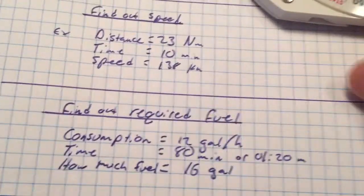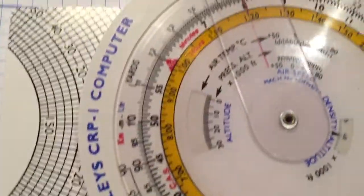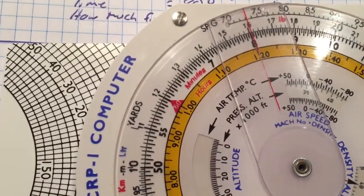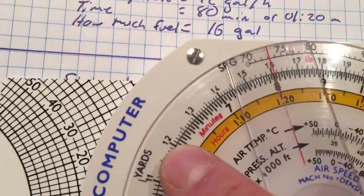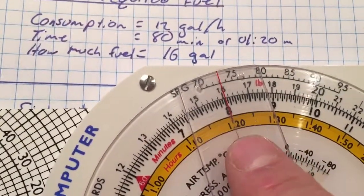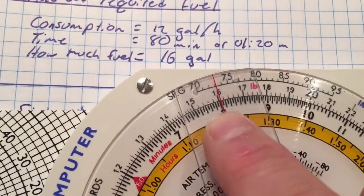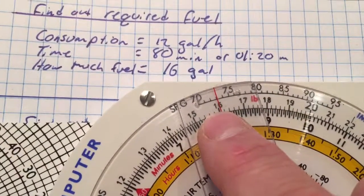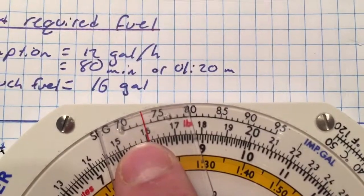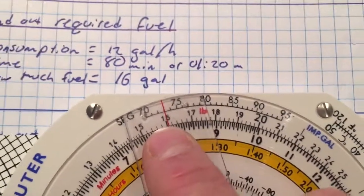And there's an answer. So you mark up the index marker with the consumption, which is 12 gallons per hour. Find out how long you've been going, so 80 minutes, and then it'll tell you how much fuel that you'll use. So 16 gallons.